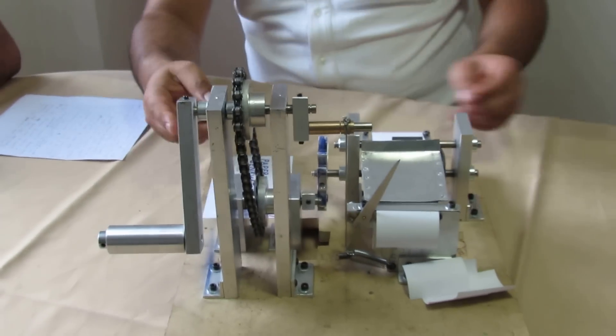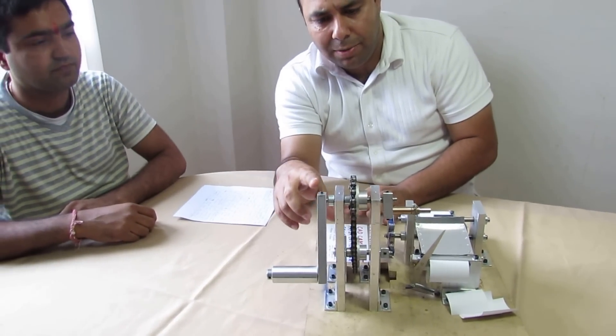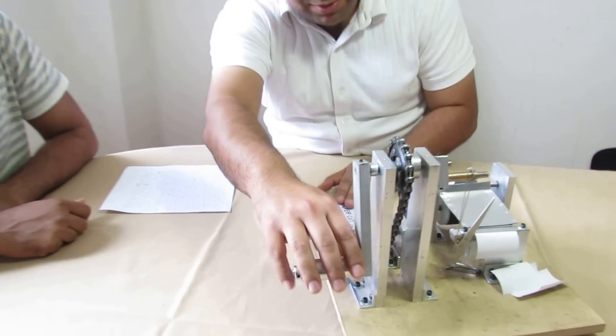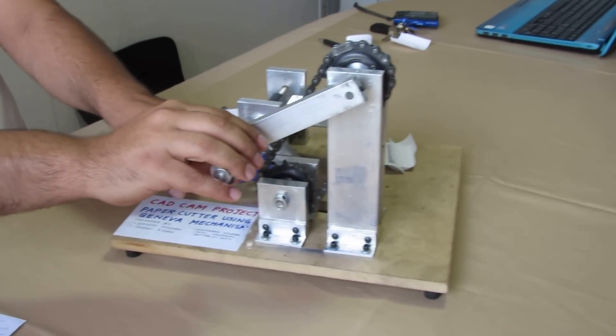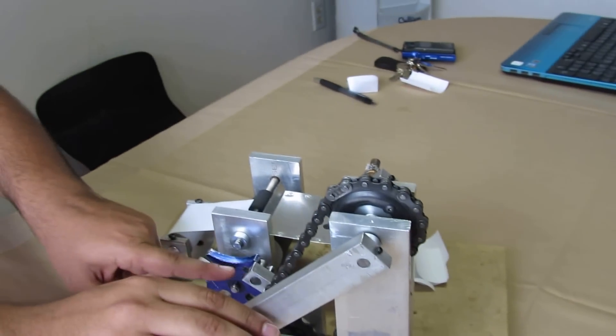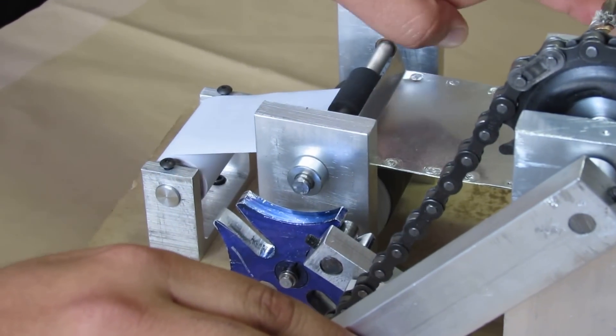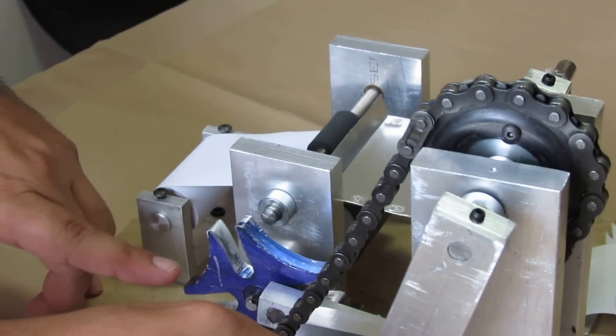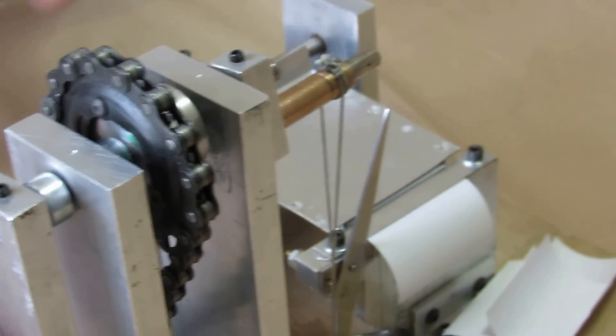And as you can see, we adjusted the timing or the synchronization of these two shafts so that when this pin is engaged in the slot of this Geneva wheel, our cutter is in the open position. So while this Geneva wheel is pushing the paper forward, the cutter is in the open position.